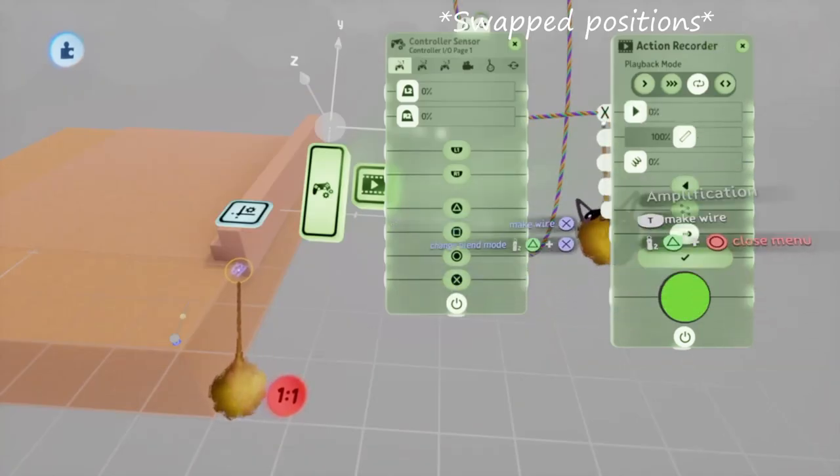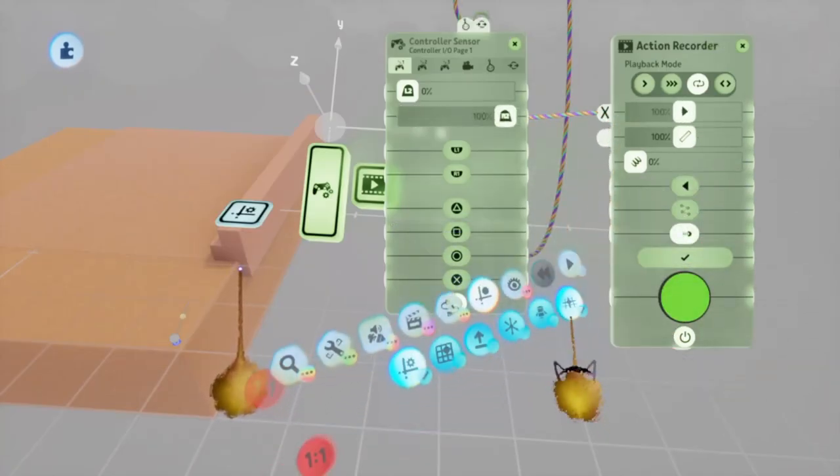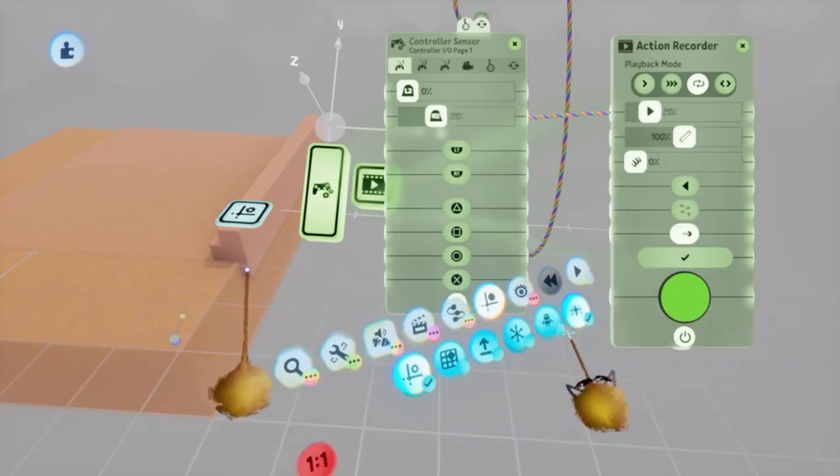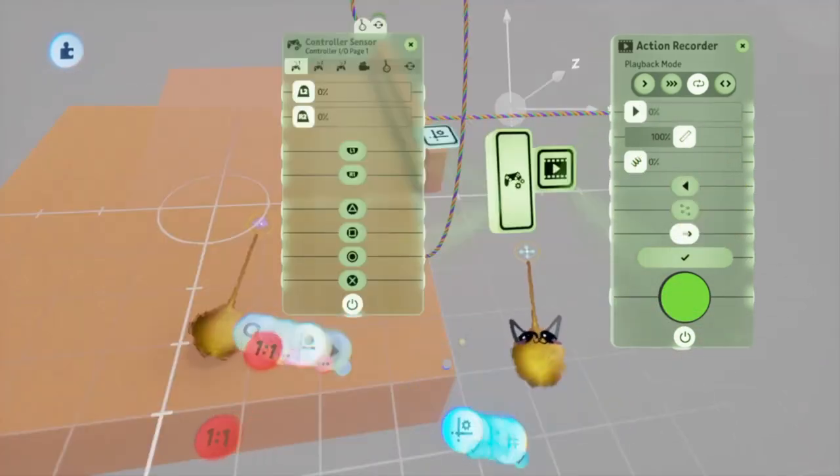Now connect the R2 output to the speed input of the action recorder. The more you press the trigger, the faster it moves. You can also change the max speed on a full press.